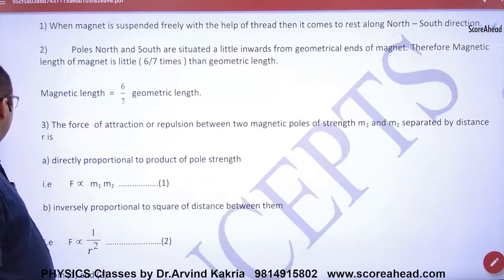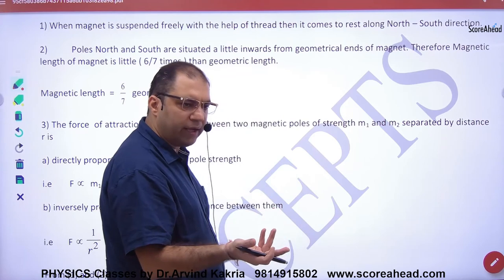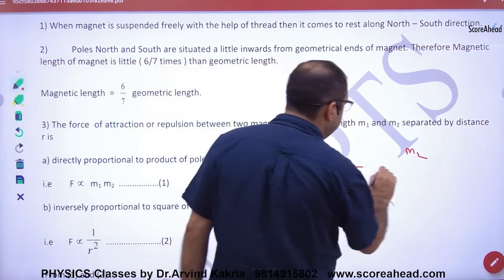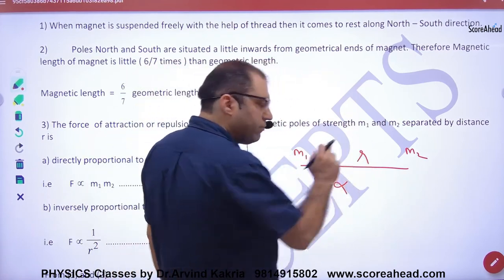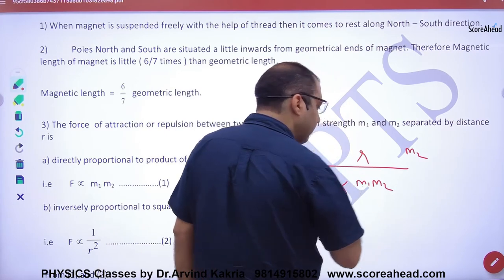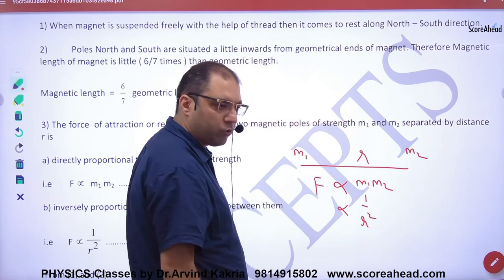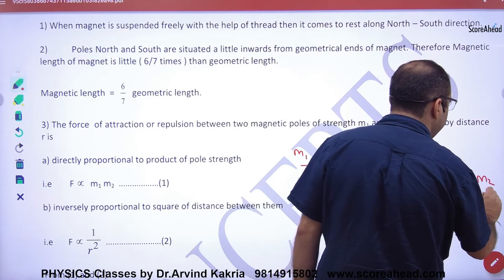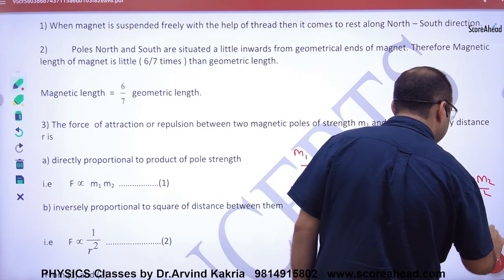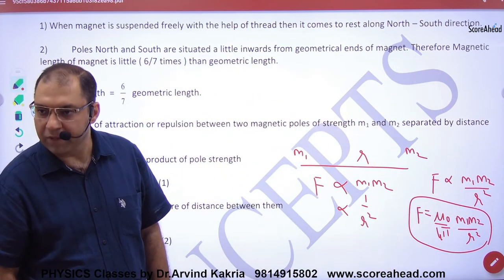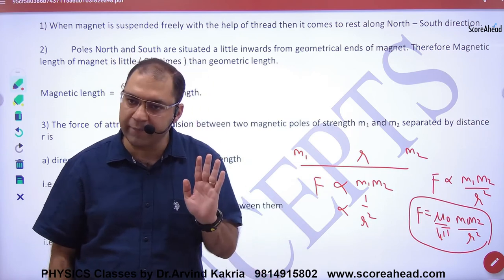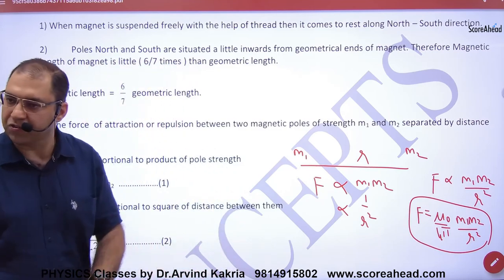Next property: if you have two separate magnets with pole strengths M1 and M2, separated by a distance R, the force between them can be attraction or repulsion depending on whether they are unlike or like poles. The force is directly proportional to M1 times M2, and inversely proportional to R squared. So F equals (mu naught over 4 pi) times M1 times M2 divided by R squared. This is Coulomb's law in magnetism, exactly analogous to Coulomb's law in electrostatics.